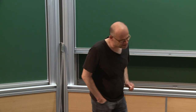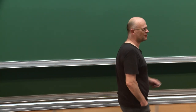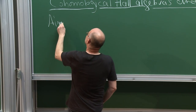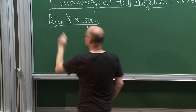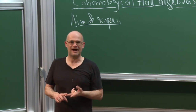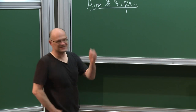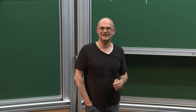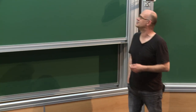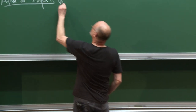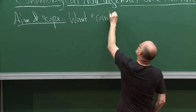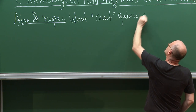This talk is about chromological hall algebras and motivic invariance of curves. I first want to explain the aim and scope of this series of lectures — what, why, how, and where. This is a school on enumerative geometry, and we want to enumerate things which don't seem too geometric, namely quiver representations.